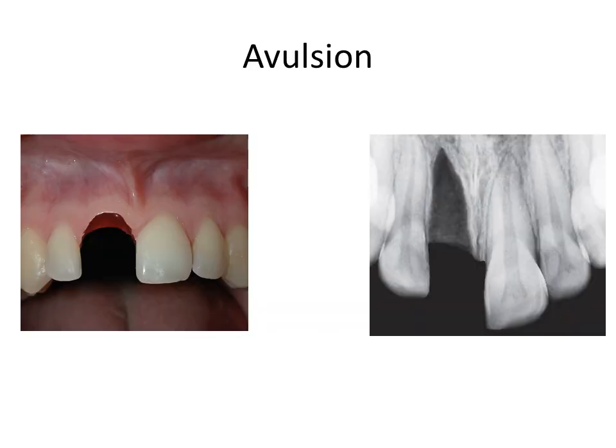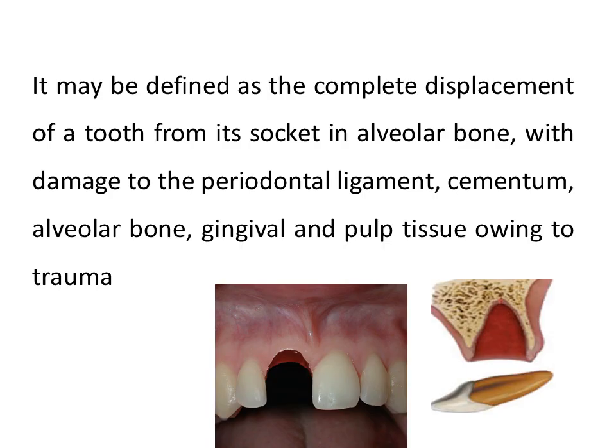What is Avulsion? It is complete displacement of the tooth out of its alveolar socket. It is also known as exarticulation of the tooth. There is damage to the entire tooth structure along with adjacent tissues — the gingiva, periodontal ligament, cementum and the alveolar bone. The definition of avulsion: it may be defined as the complete displacement of a tooth from its socket in alveolar bone, with damage to the periodontal ligament, cementum, alveolar bone, gingival and pulp tissue owing to trauma.